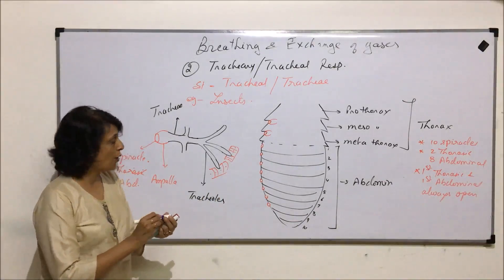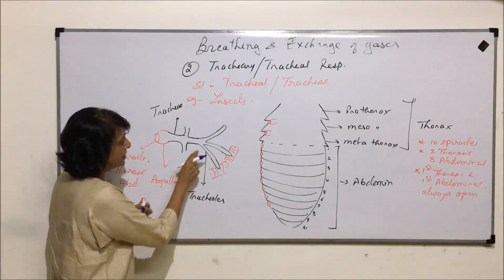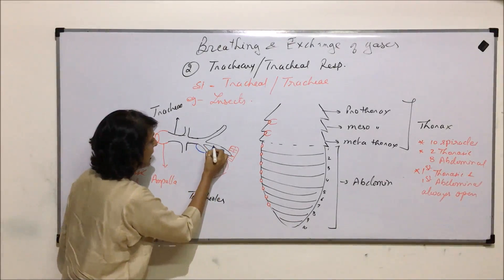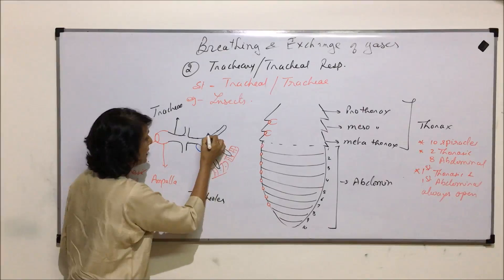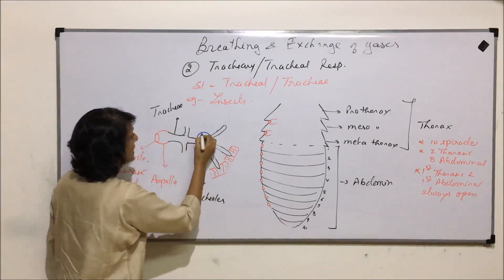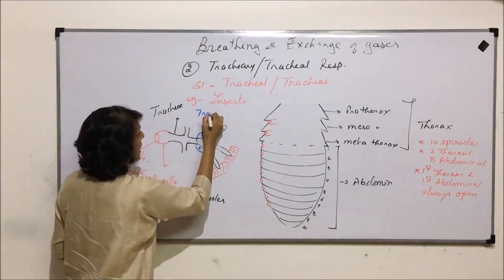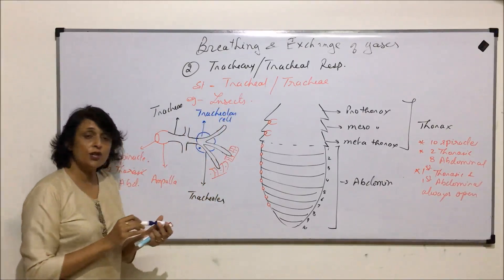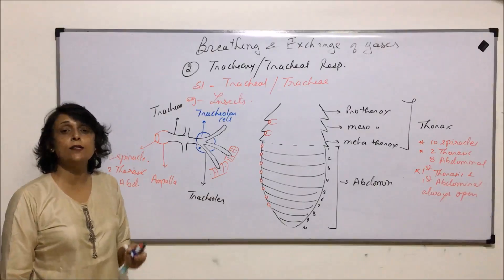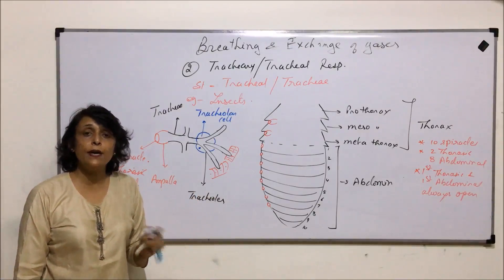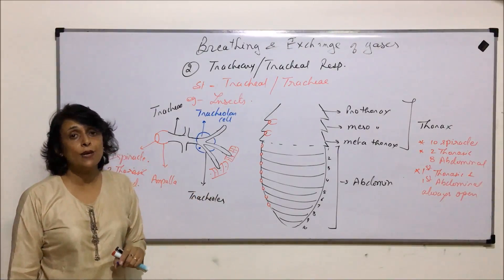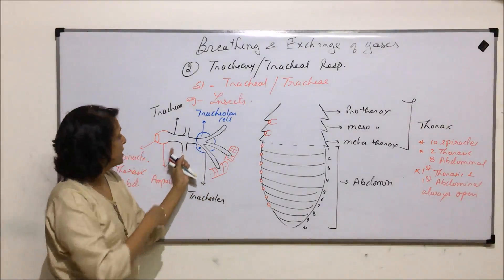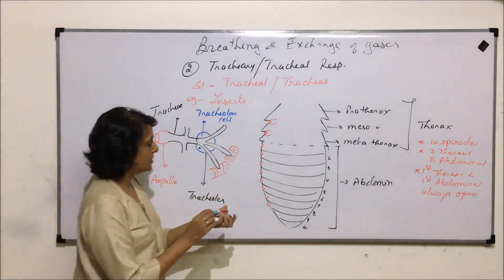At the junction where the tracheoles arise, there is a large cell. This cell is known as the tracheolar cell. The function of this tracheolar cell is to secrete a fluid which is known as tracheolar fluid.